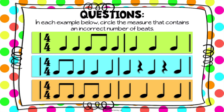Now take a look at the blue example and see which one has the wrong number of beats between those two measures. You can pause the video if you want a little extra time. In that first measure I see a ti-ti — that's one beat — and three tas: two, three, four. So that measure is correct.